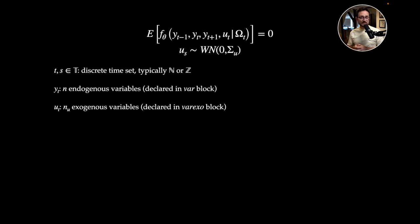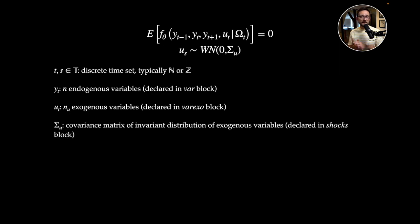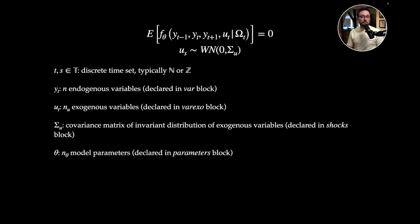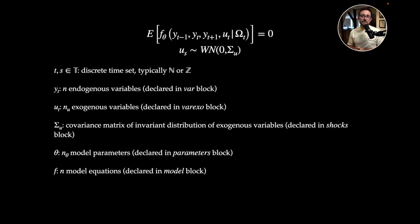We have nu exogenous variables, declared in the varexo block, and we have the covariance matrix of the exogenous variables, which you declare in the shocks block. Then we have model parameters theta, declared in the parameters block. We have our model equations f, and since we have n endogenous variables we also need n model equations — those are the equations you type in the model block.